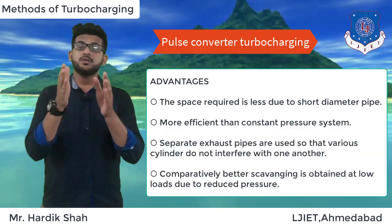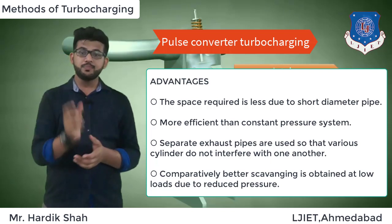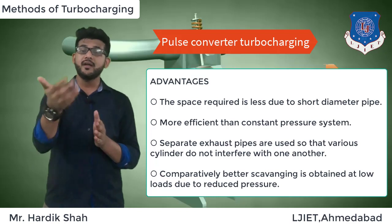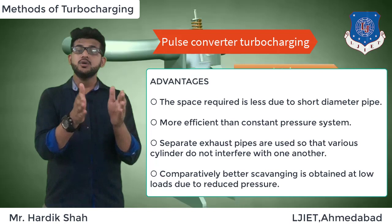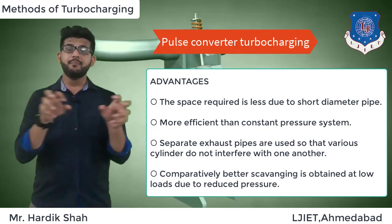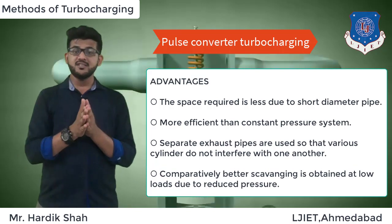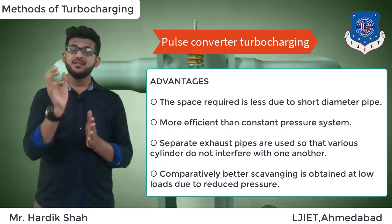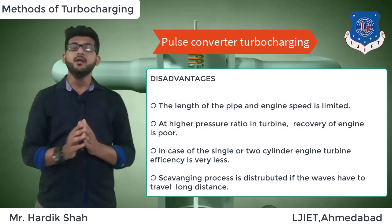The advantages of pulse turbocharging are: the space required is very small due to short-diameter narrow pipes; it is more efficient than the constant pressure system; separate exhaust pipes for various cylinders prevent interference between cylinders; and comparatively better scavenging is obtained at low load conditions due to the reduced pressure.